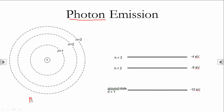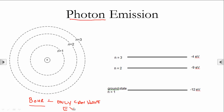Photon emission. This is the Bohr model of the atom. We have the nucleus in the center, and each one of these concentric circles on the outside are energy levels. N equals 1 is the ground state — the lowest energy an electron can have inside this particular atom. N equals 2 is the next highest, N equals 3 is the next highest after that. Bohr said electrons can only have exactly the amount of energy that corresponds to a given level. So in the ground state, an electron can have negative 12 electron volts of energy — it can't have negative 11, can't have negative 12.5. It has to have exactly negative 12 electron volts.